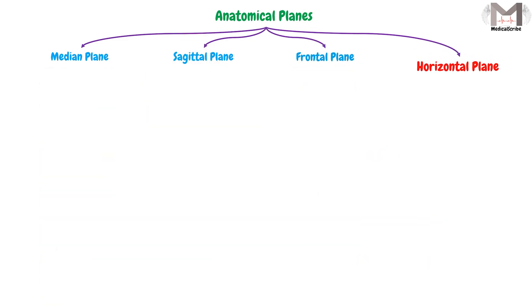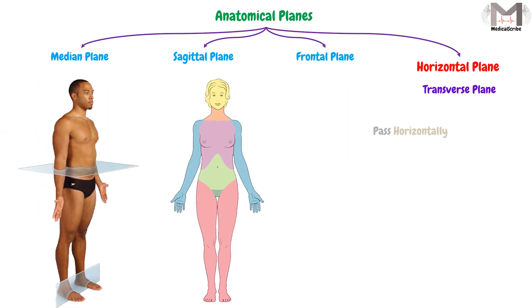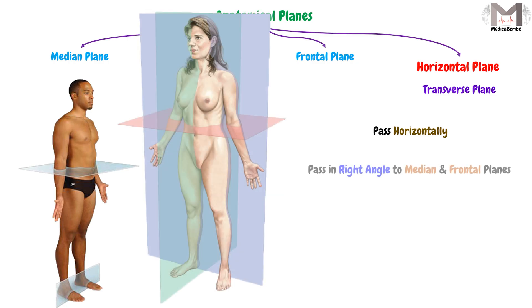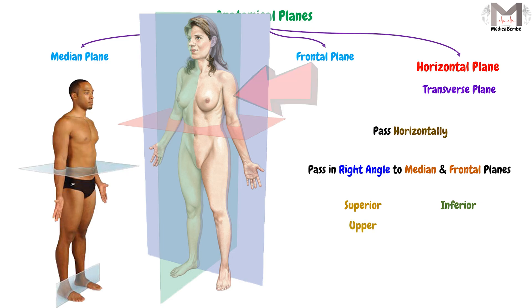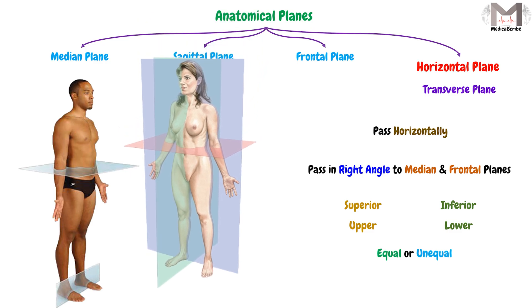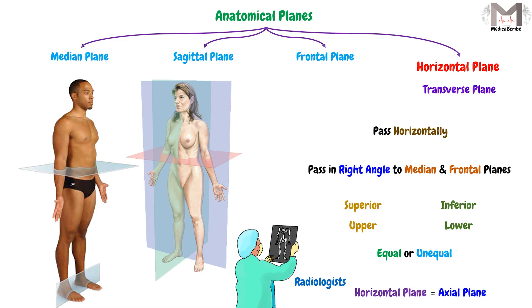The final plane we have is the horizontal plane, or the transverse plane. This plane passes in a horizontal way through the body, or we can say it passes at a right angle to both the median and the frontal planes at the same time. So it will divide the body into a superior part and an inferior part, or upper part and lower part. These parts may also be equal in size or unequal. Radiologists call this plane the axial plane, which is the same as the horizontal plane.